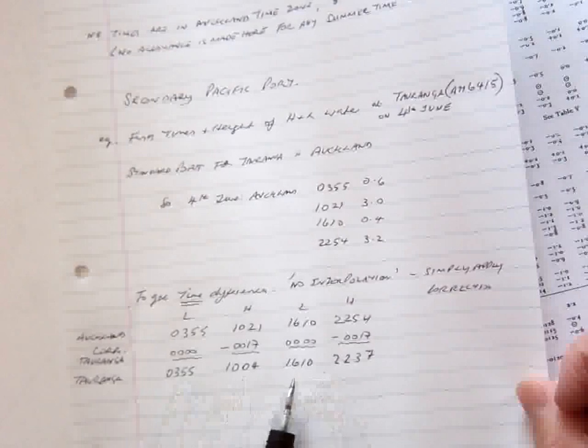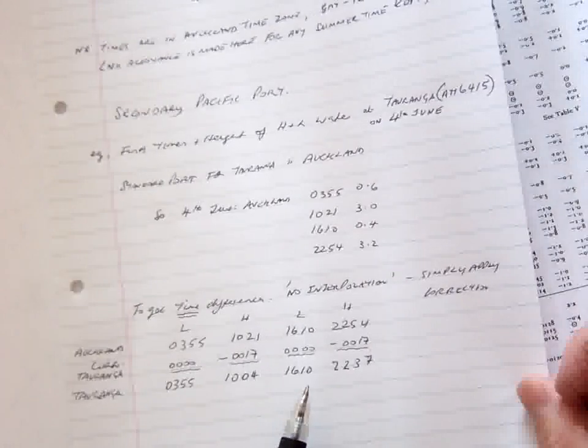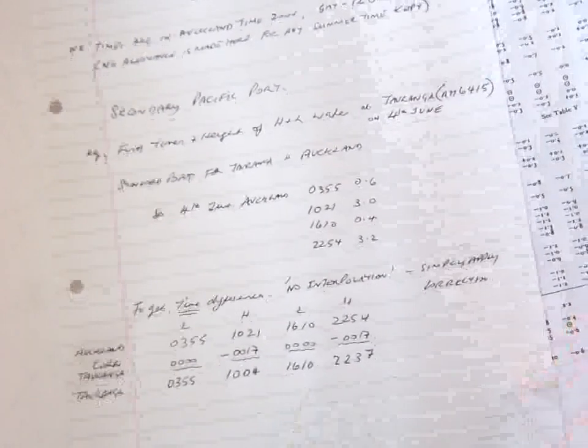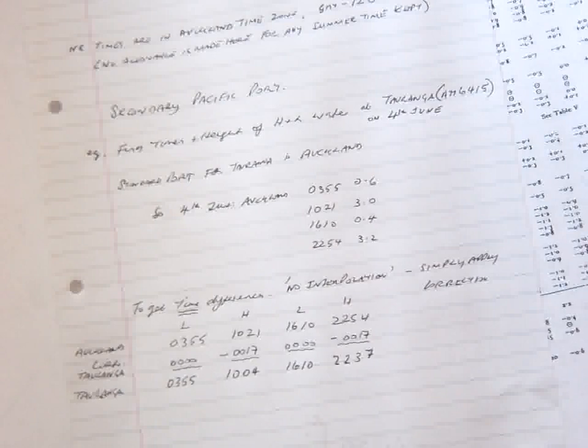So there's no interpolation. You simply get the corrections from the tables to apply. Apply those corrections, and you've straight away got your times of high and low water for the second report. For a standard port, it's very straightforward. You go straight into the main table. For a second report, you just simply allow these differences. No interpolation at all.